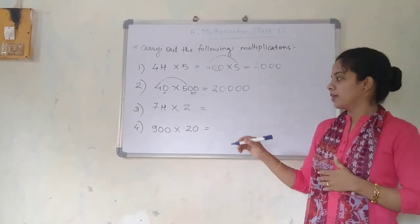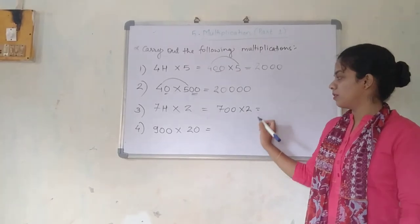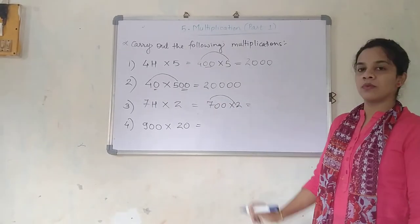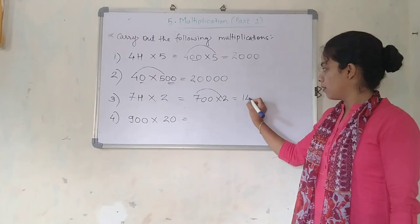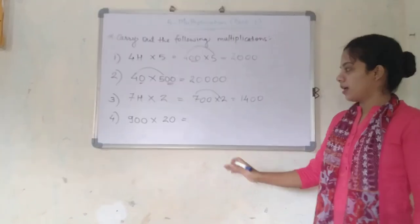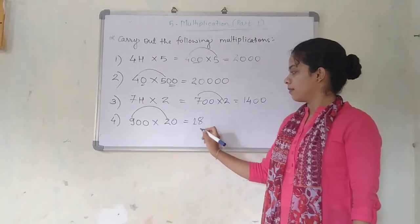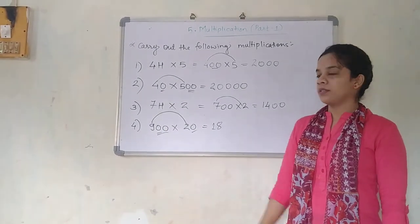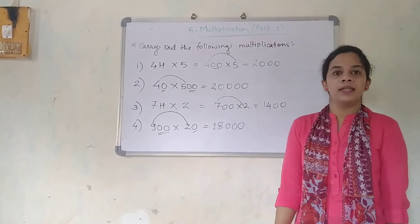7H into 2 — 7H means 700 — multiplied by 2. Just see: 700 multiplied by 2. Don't look at the zeros; just look at 7 and 2. 7 into 2, or 7 multiplied by 2, is 14. These two zeros will be added: that is 1400. Next: 9 into 2 is 18. Here two zeros and here one zero — two plus one, three zeros. Add three zeros: it is 18,000.